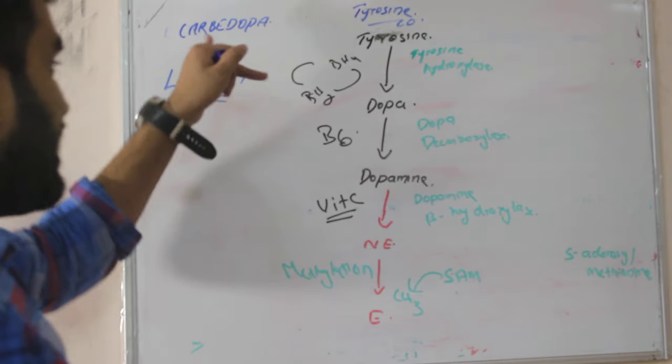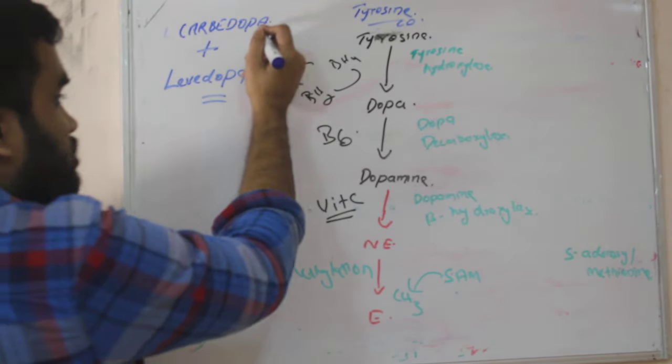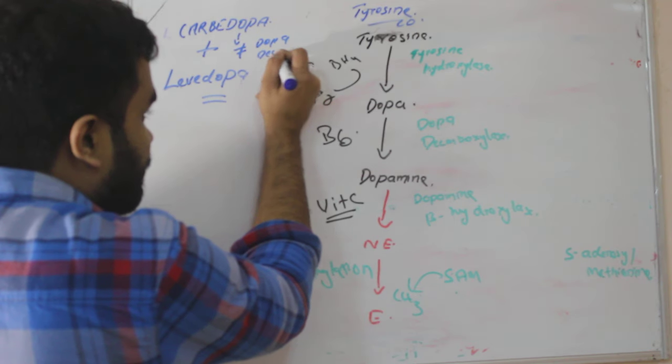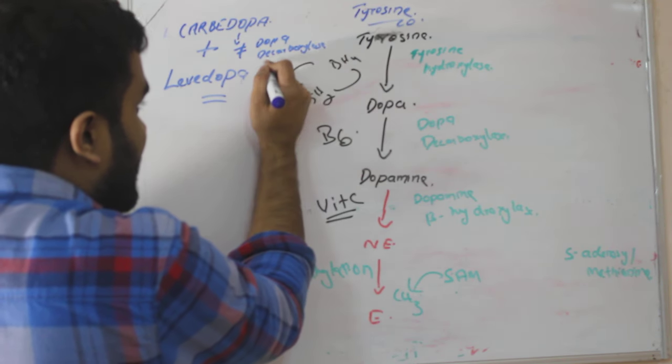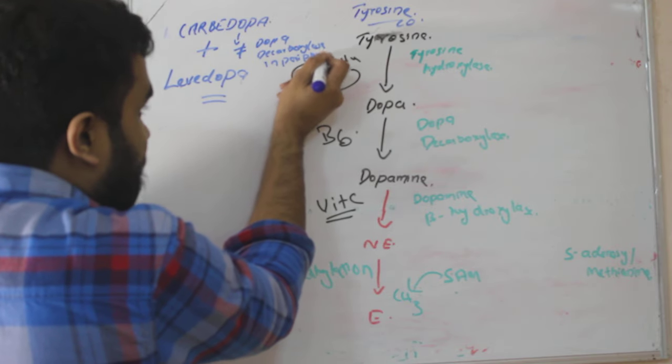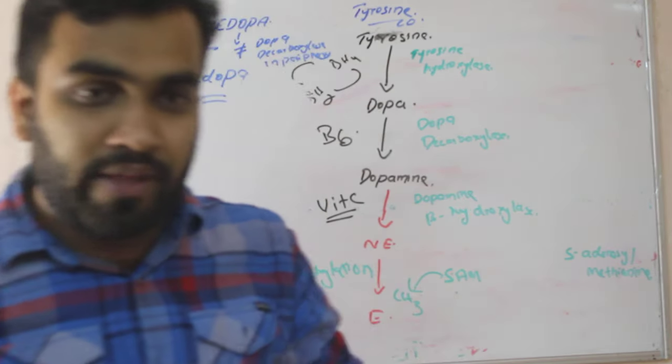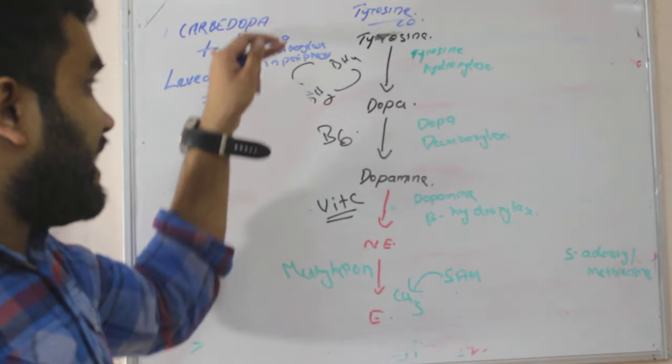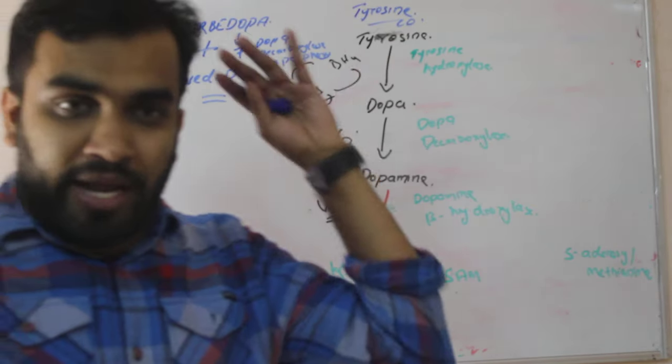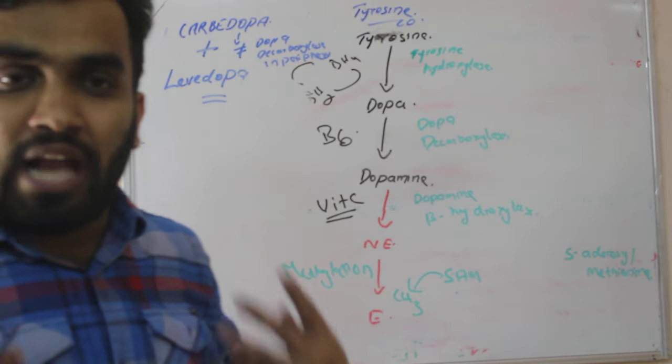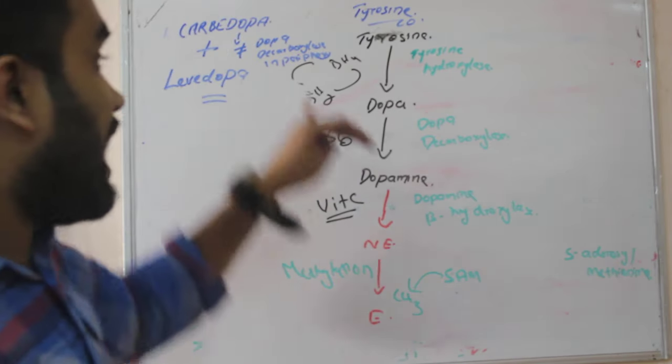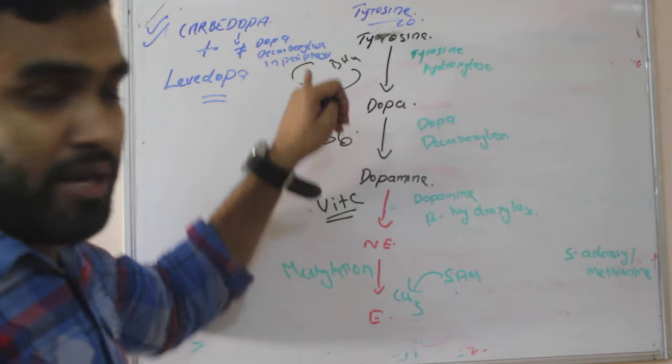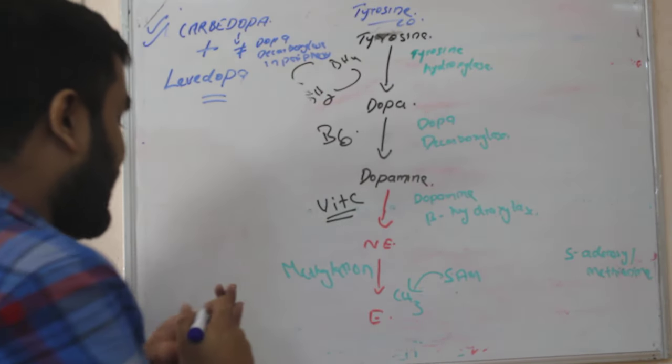So why we are giving both carbidopa and levodopa? What carbidopa is doing is it is inhibiting the enzyme dopa decarboxylase, dopa decarboxylase in periphery. Periphery means it will inhibit this enzyme in all other parts of our body. So all the dopa can go to the brain and give dopamine there. So levodopa will work in brain only. So no use in other parts, so all the dopamine can be get in brain. That's why we are giving levodopa and carbidopa, because carbidopa inhibits dopa decarboxylase only in periphery, not in brain. Very important, so we are giving in a combination.